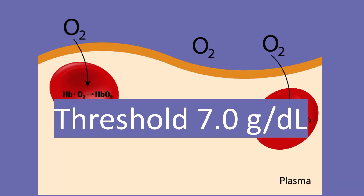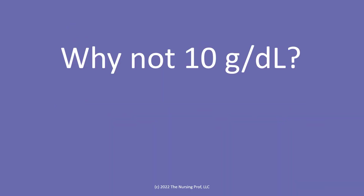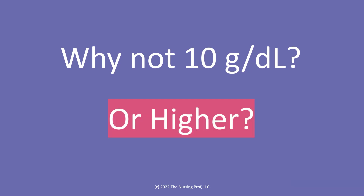Now that's the threshold we've been using for quite some time. Why not ten grams per deciliter? For a long time, we used to use ten as our cutoff or threshold for transfusing our patient. However, what we found is that may not be the best idea. In fact, at some points in time, we've actually used a number higher than ten for transfusing our patients.